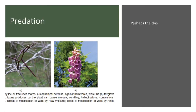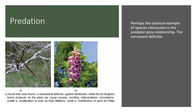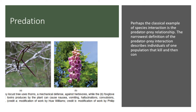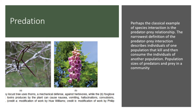Perhaps the classical example of species interaction is the predator-prey relationship. The narrowest definition of the predator-prey interaction describes individuals of one population that kill and then consume the individuals of another population. Population sizes of predators and prey in a community are not constant over time, and they may vary in cycles that appear to be related.